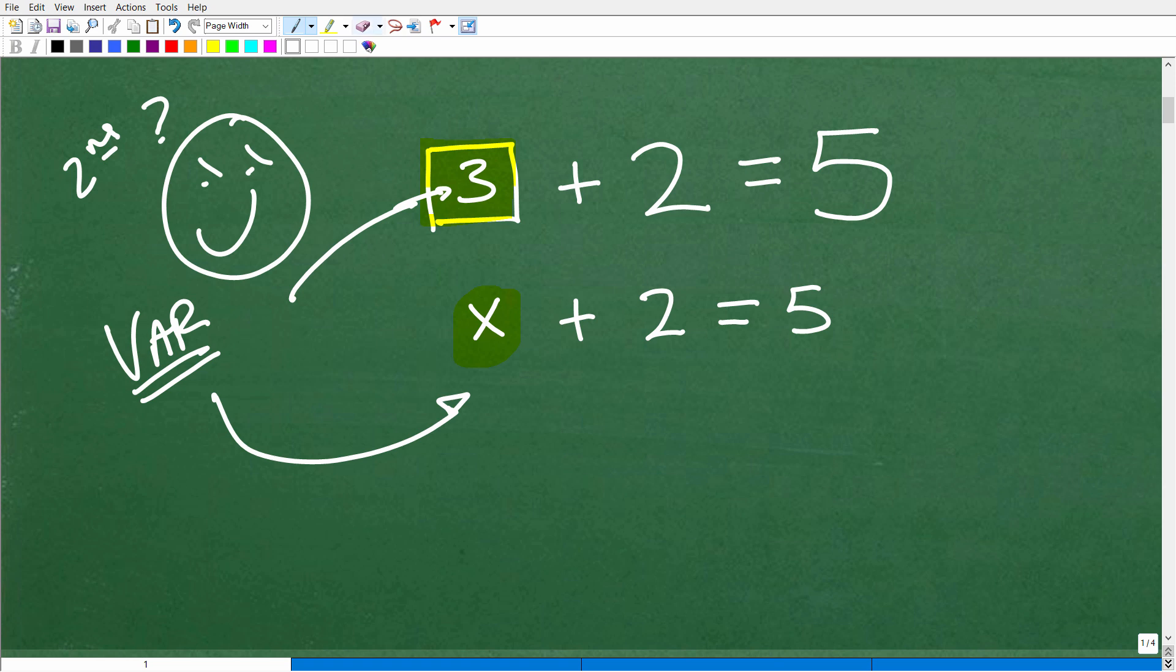And you'd be correct because your brain would be thinking to yourself, what number do I need to plug in here to make this true? If I plugged in a 1, I would get 1 plus 2. That's 3. Nope, that's not 5. How about if I plug in a 2? 2 plus 2, that's 4. Or how about a 3?